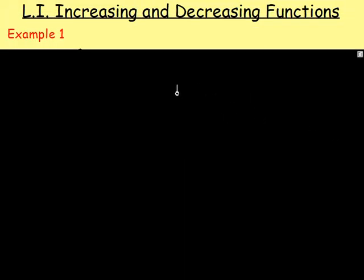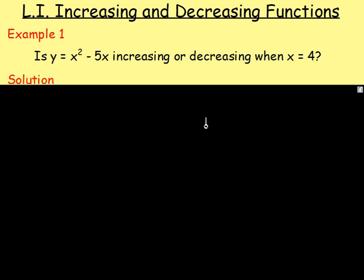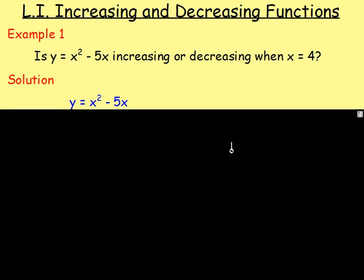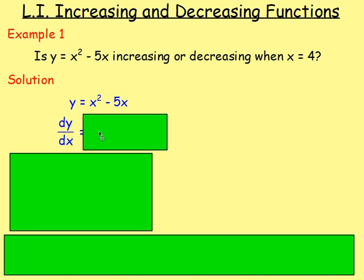Example number one. Is y equals x squared minus 5x increasing or decreasing when x equals 4? So is the graph sloping up or sloping down? Is the gradient positive or negative? We start with y equals x squared minus 5x. To find out if it's increasing or decreasing, we use the derivative. Differentiating gives dy/dx equals 2x minus 5.